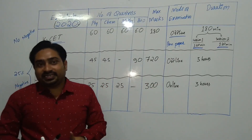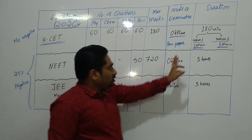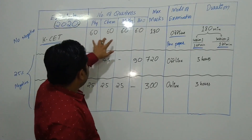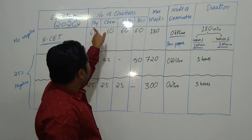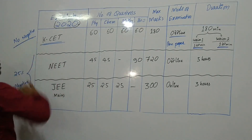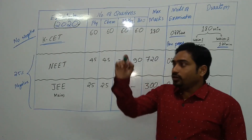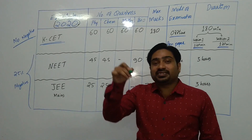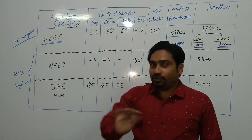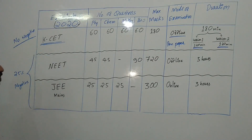The exam is conducted over two days — first day is Session 1, second day is Session 2. Each session is 120 minutes. You can take either PCM or PCB combination. Importantly, there is no negative marking for the KCET examination — if you answer correctly you get marks, and wrong answers carry zero penalty.